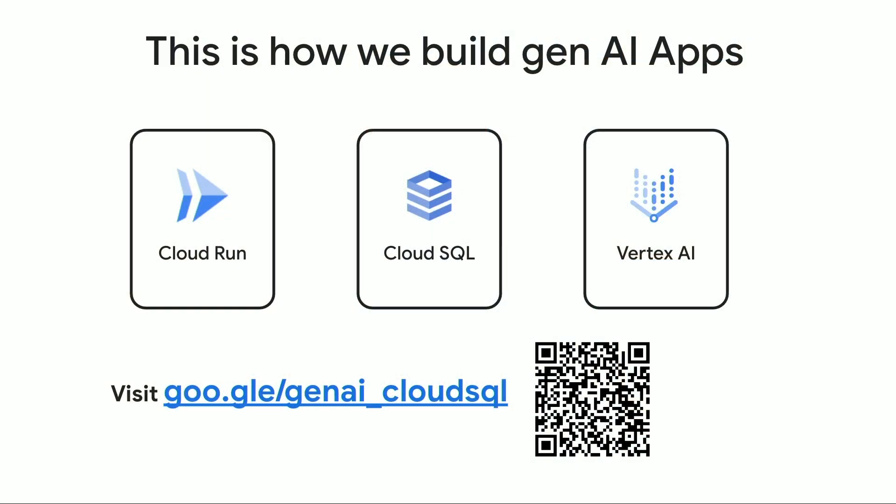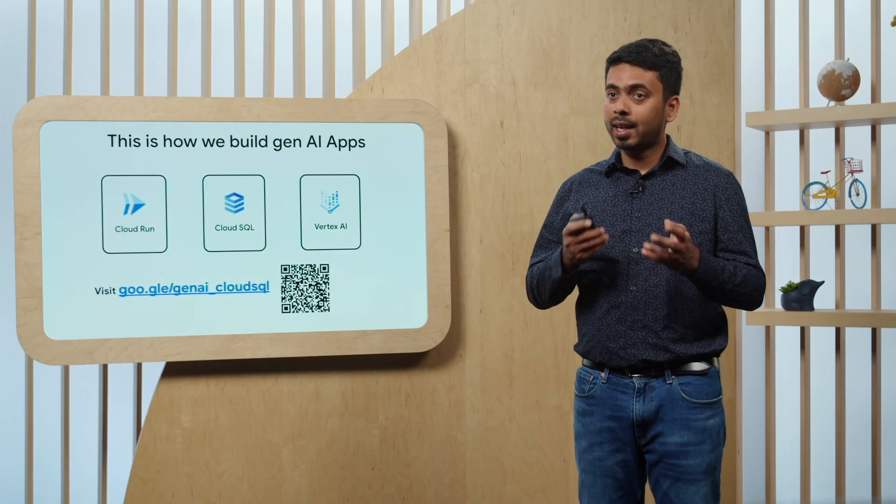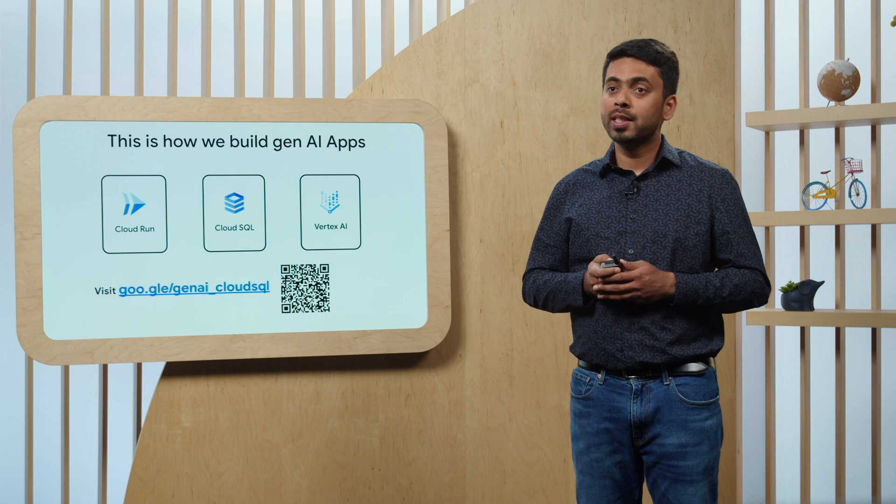To recap, it is very easy to build a Generative AI application when you use Cloud Run, Cloud SQL for PostgreSQL, and Vertex AI. To make it easier, we have built a jumpstart solution using all three products. Here is the link and QR code to the GitHub repo containing this jumpstart solution — please download it, try it, and start building your Generative AI application. Thank you.